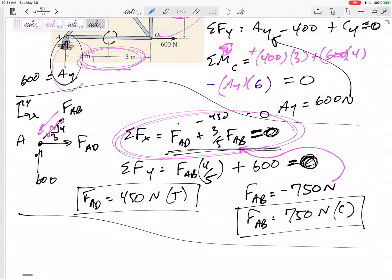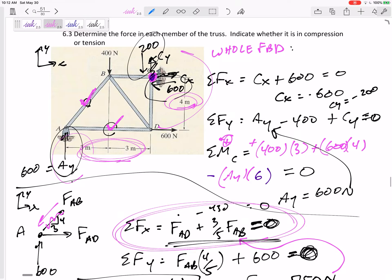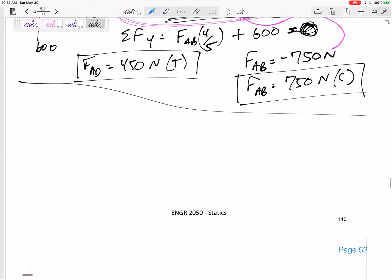So FAD is 450. It came out positive. Positive means I guessed correctly, I guessed tension. Now I think I'm ready to jump to another joint. Maybe even put like a check mark. We've solved for this one, we've solved for this one. Now I can jump to another joint. I can jump to D or B. Either of those only have two unknowns. I'm jumping to D. So let's go to D and draw a free body diagram of joint D. It has 600 that way. I just solved for this one so I know what that one is.